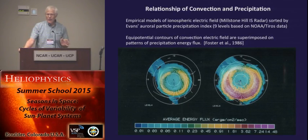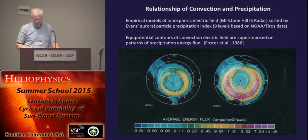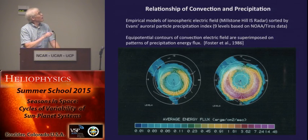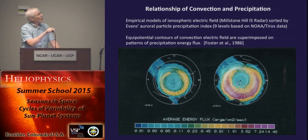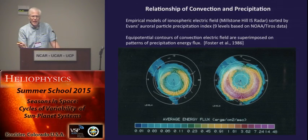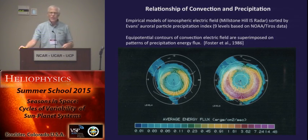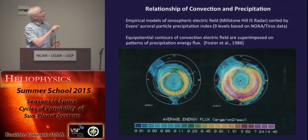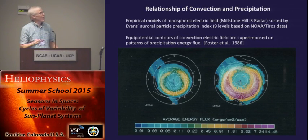One of my favorite studies was done with David Evans from NOAA. Dave Evans used the TIROS satellites measuring electron precipitation fluxes on orbits crossing the polar region. This is the north polar cap, noon at the top, clock-dial format, midnight, dusk, and dawn. The colored patterns are the average energy flux — the Evans statistical precipitation maps. He took years of satellite observations, parametrized them by precipitation intensity in a given latitude region, and divided them into nine categories with nine different maps of averaged particle precipitation intensity.